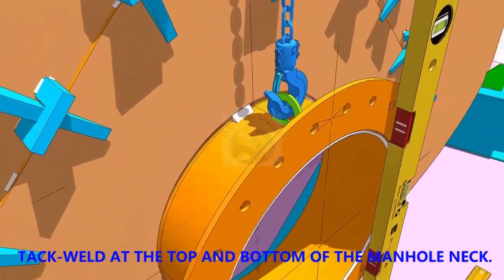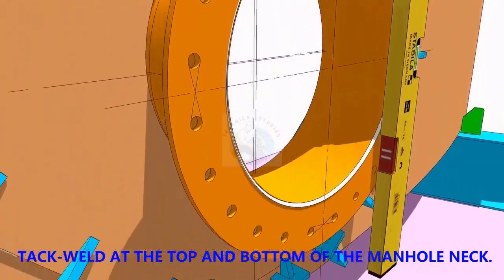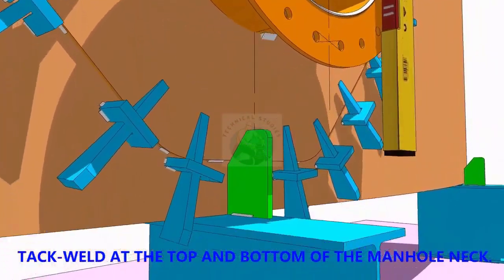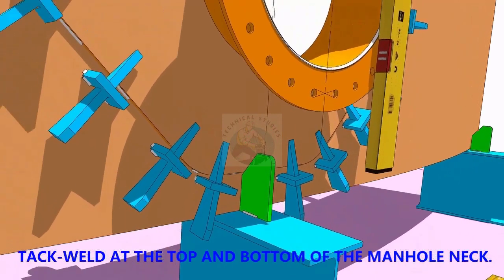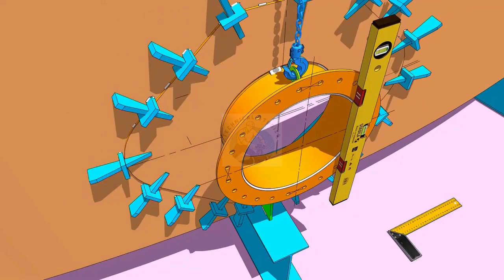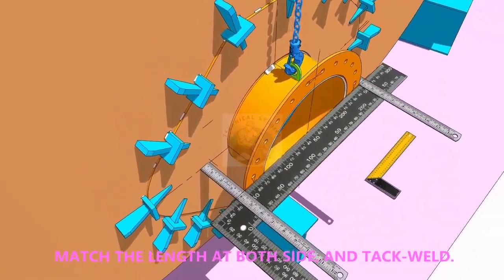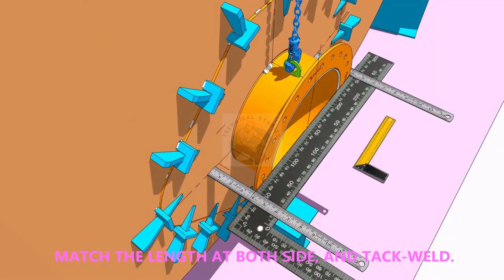TAC weld on the top and bottom side in the joint. Equal the distance on both sides of the flange as shown and TAC weld on both sides.